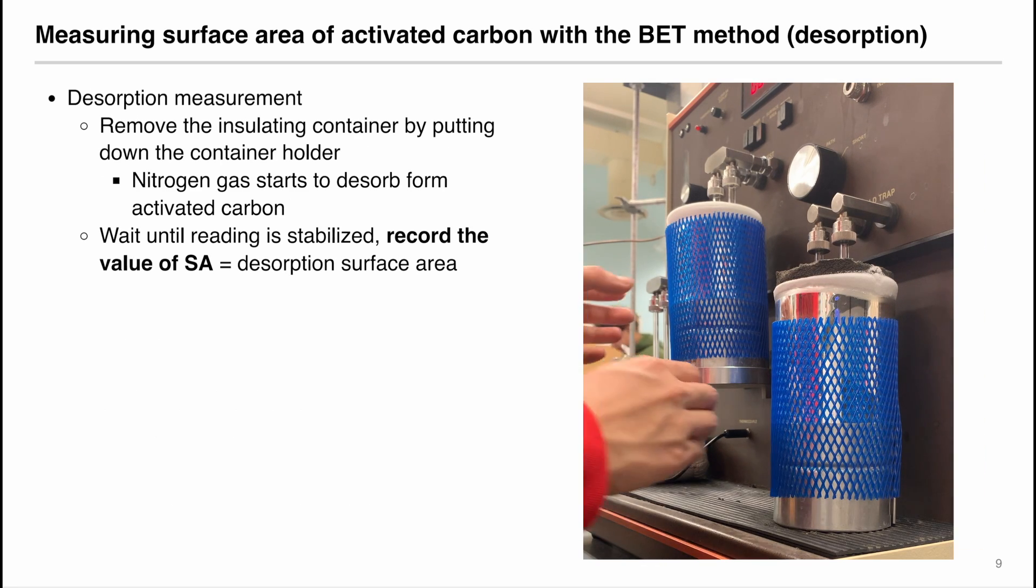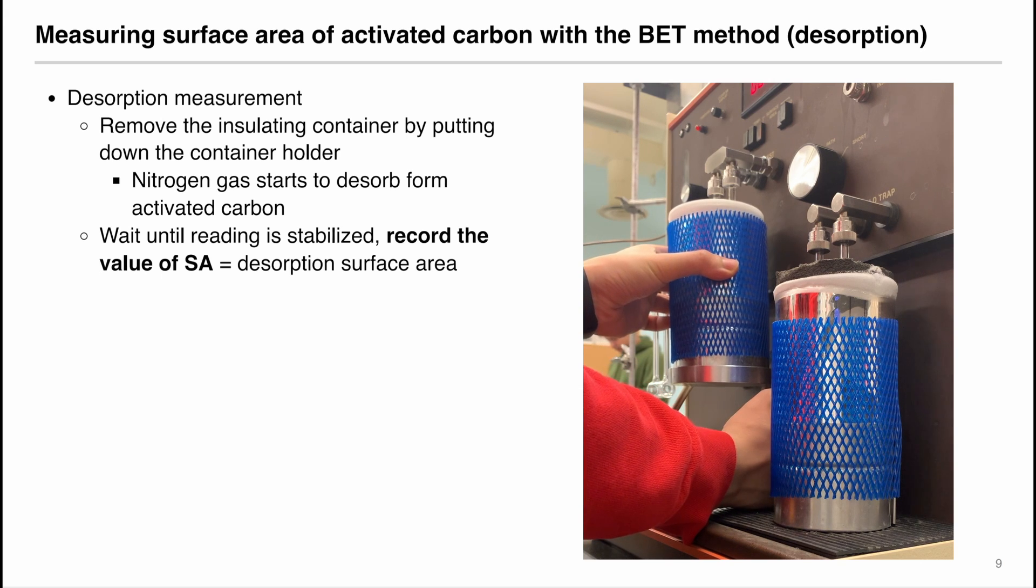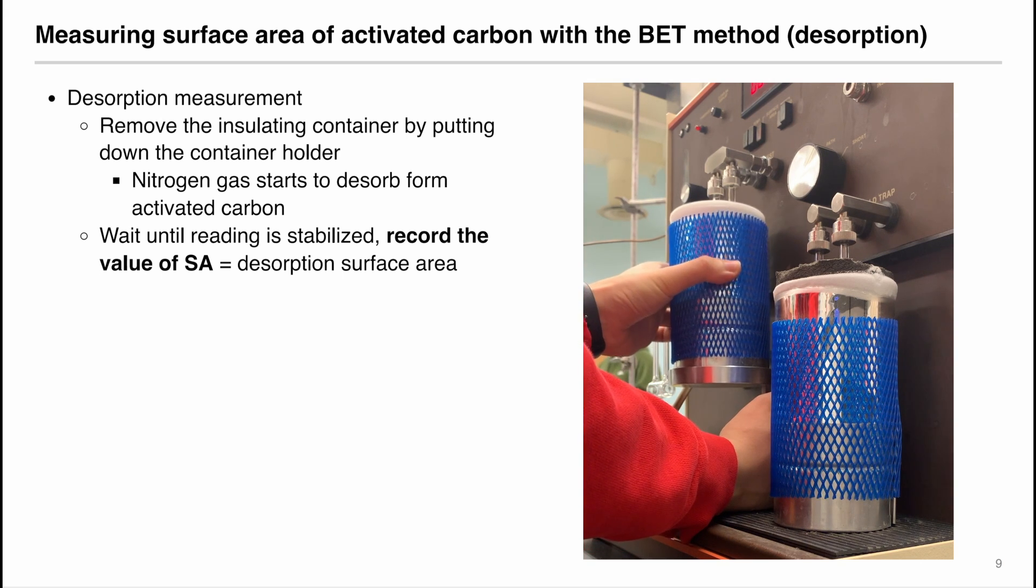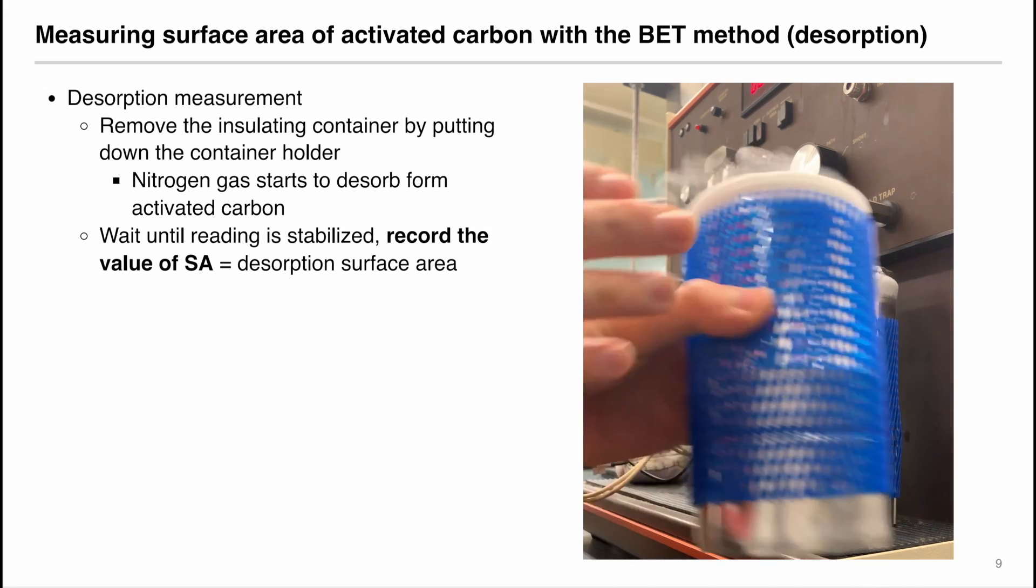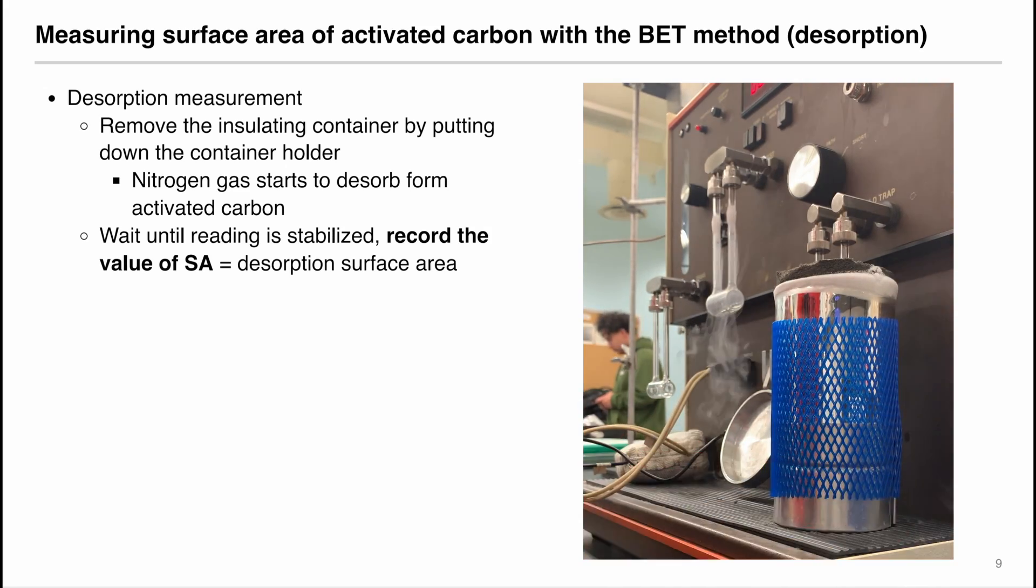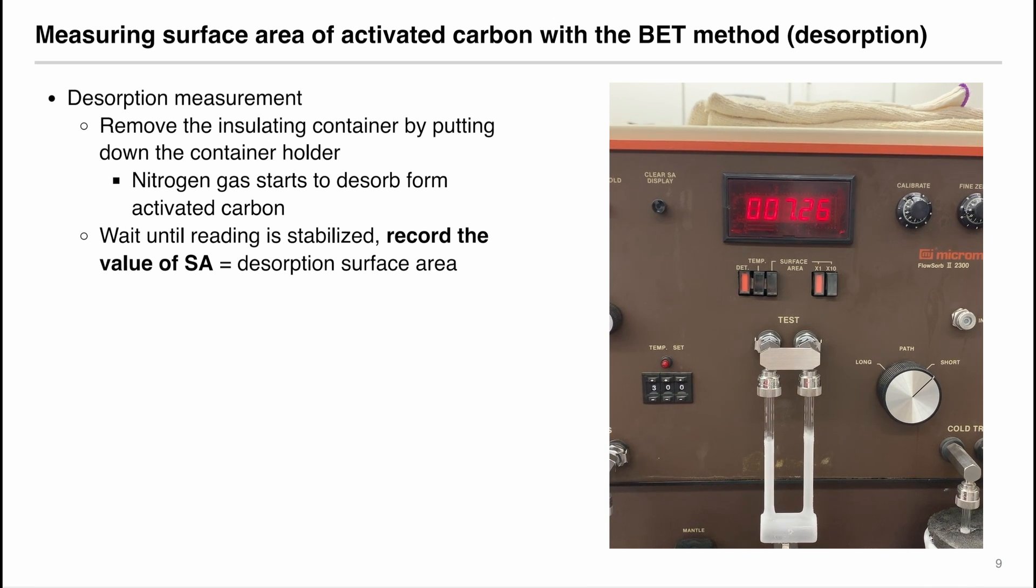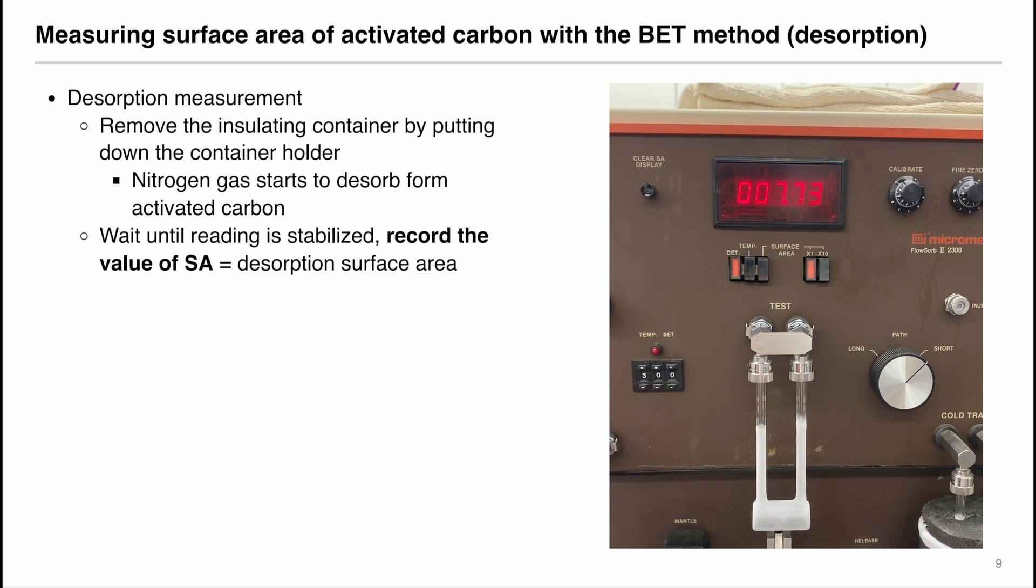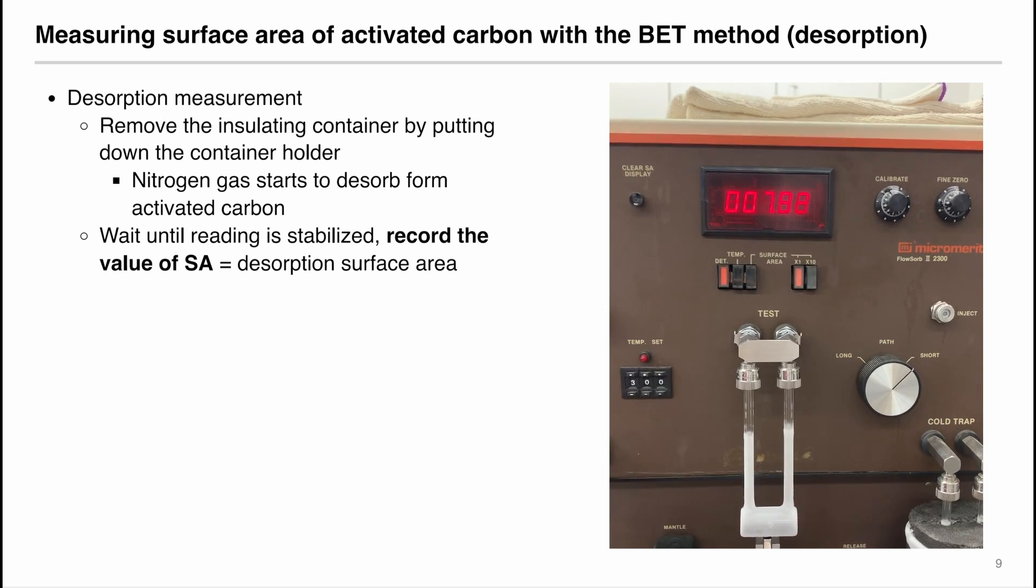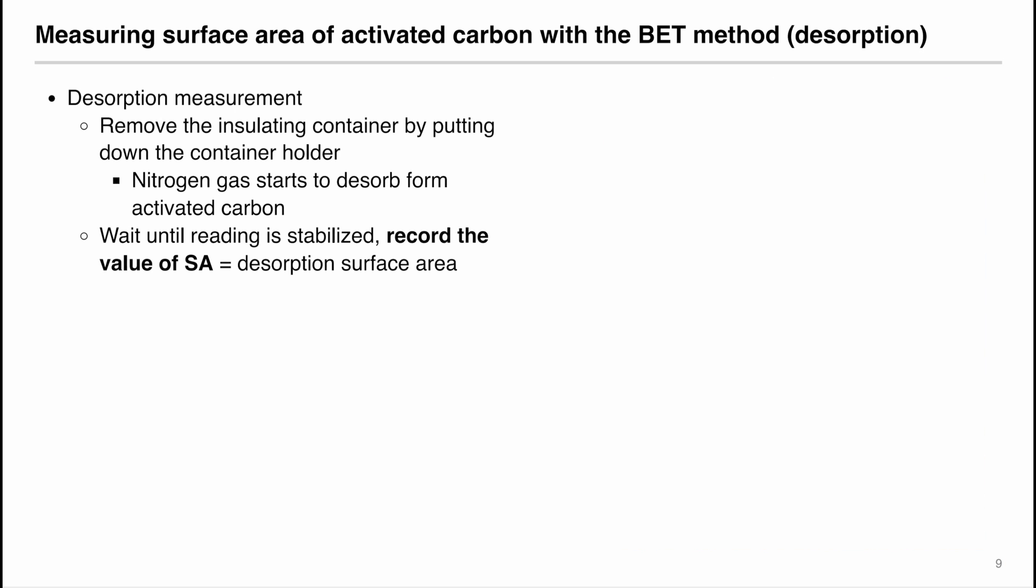Then we can perform the desorption measurement by removing the insulating container by putting down the container holder. Then the nitrogen gas will start to desorb from the activated carbon. Wait until the reading is stabilized and then record the value of the SA display. And that value is equal to the desorption surface area. Make sure you report both the adsorption and desorption surface area in your lab report. But the industry standard is to use the desorption surface area as the final reported value.